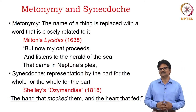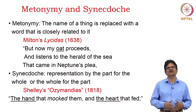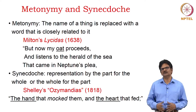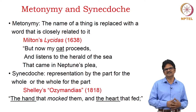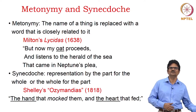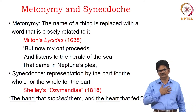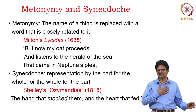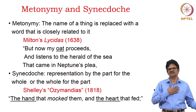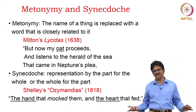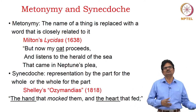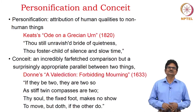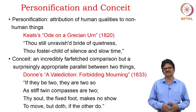Synecdoche is a representation by the part for the whole or the whole for the part. In Shelley's sonnet 'Ozymandias' we have this example: 'The hand that mocked them and the heart that fed.' The hand belongs to the person, and similarly the heart belongs to the person — the person who mocked and the person who fed. The whole person is referred to by the hand or the heart.